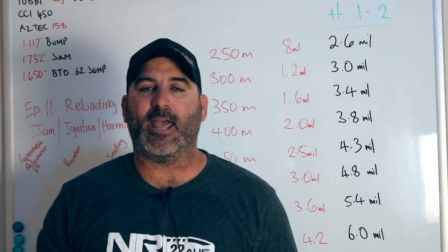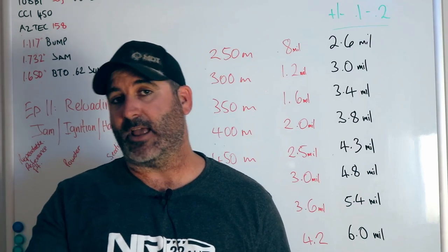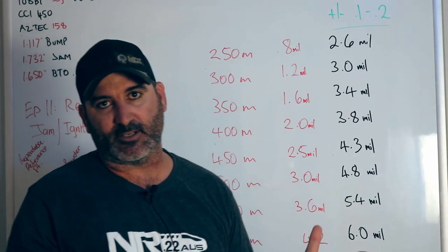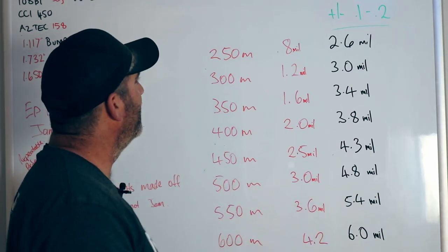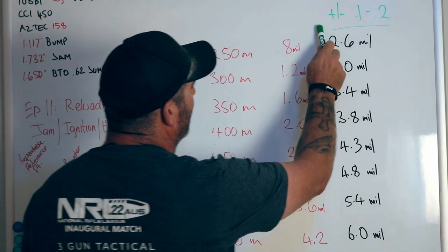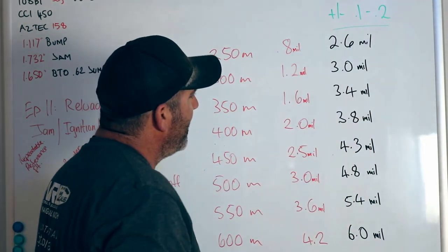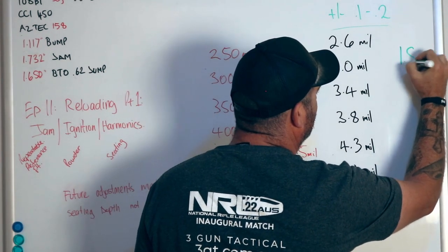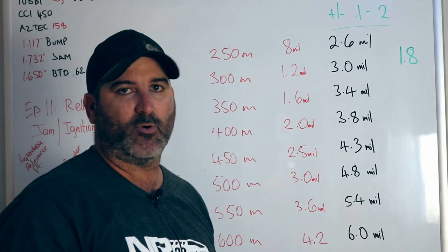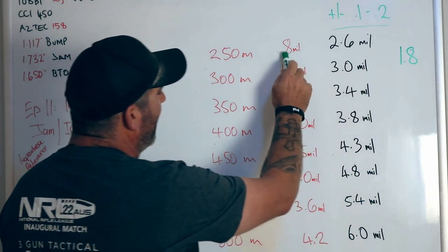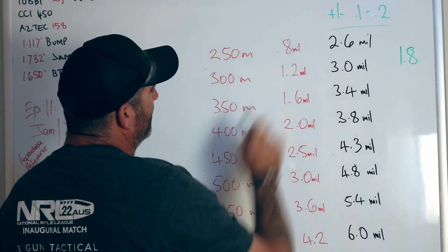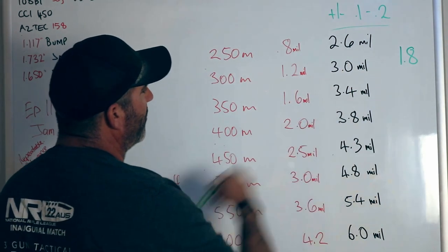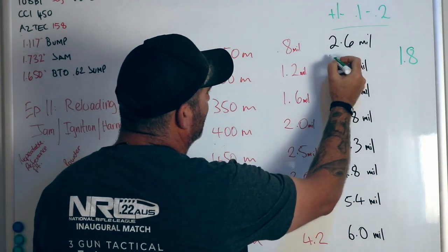We now know that our bracket is 250 meters down to 650 meters — we'll just work to 600 because I ran out of whiteboard. We know we can have a 0.1 or 0.2 error, and our Speed Drop number is 1.8. What we're doing is adding the 1.8 to our current elevation, and that gives us a new mil hold. So if I add 1.8 to 0.8, it gives me 2.6.